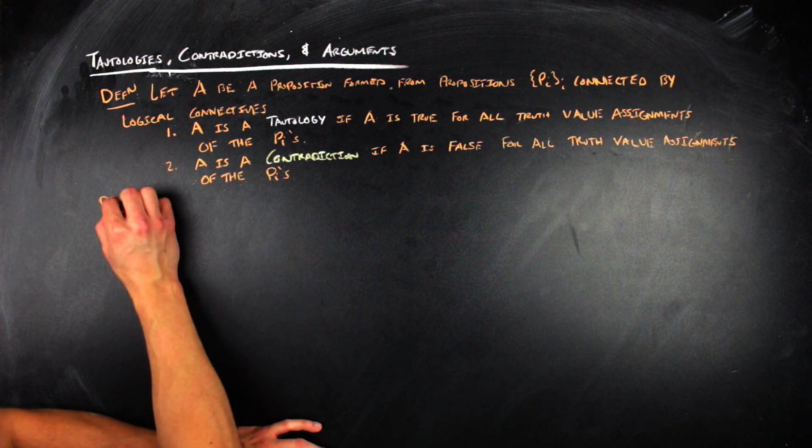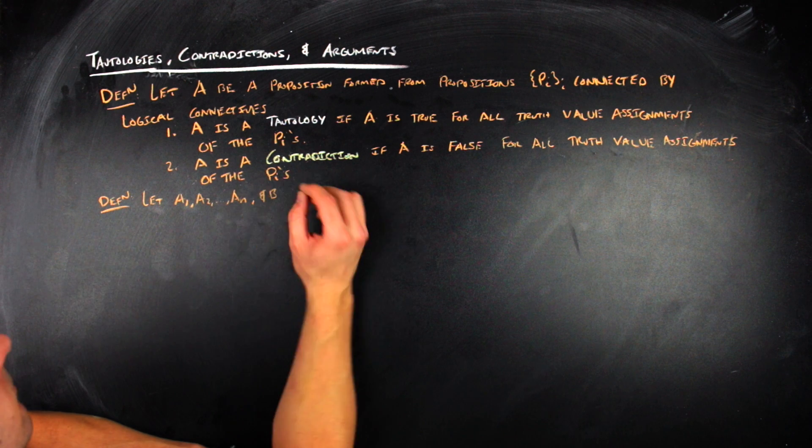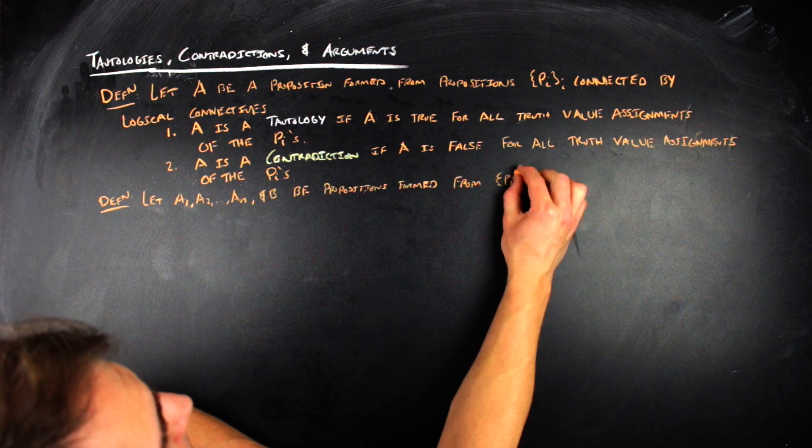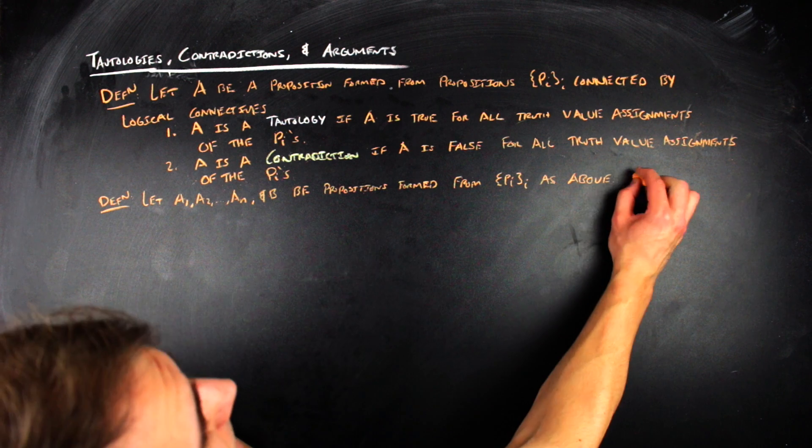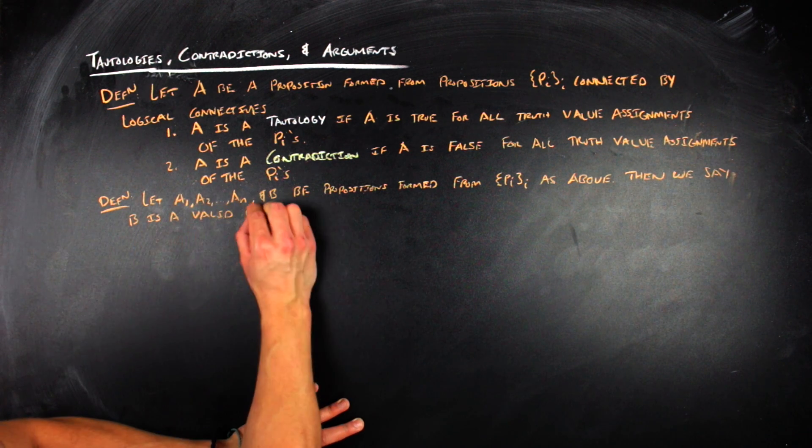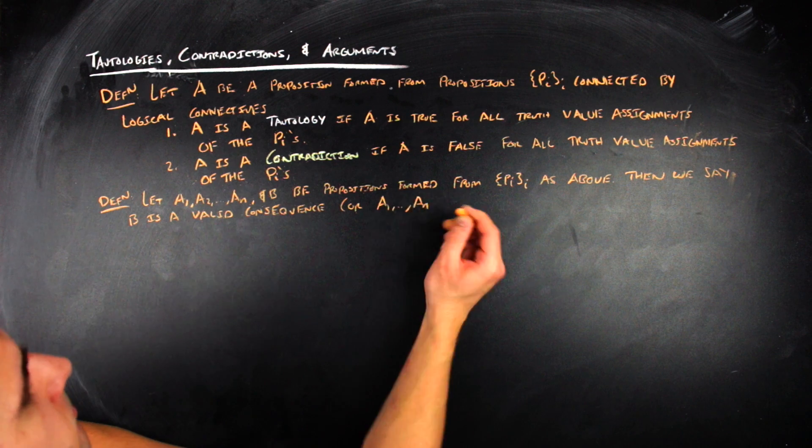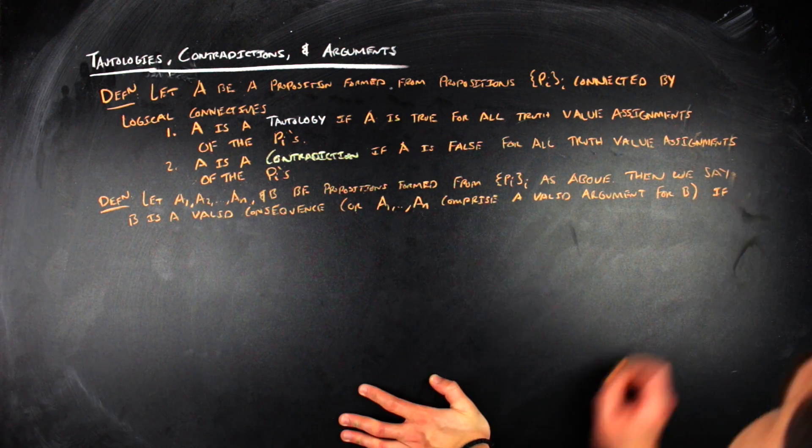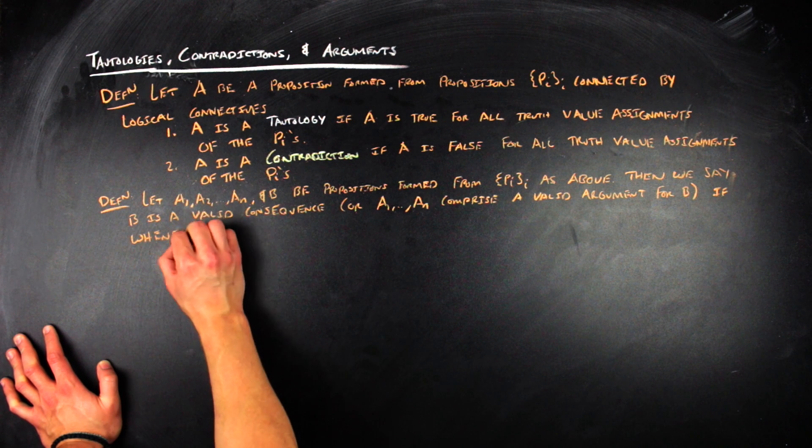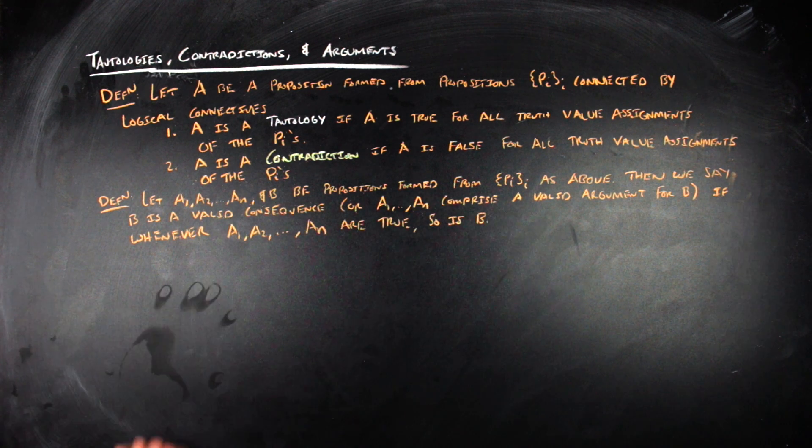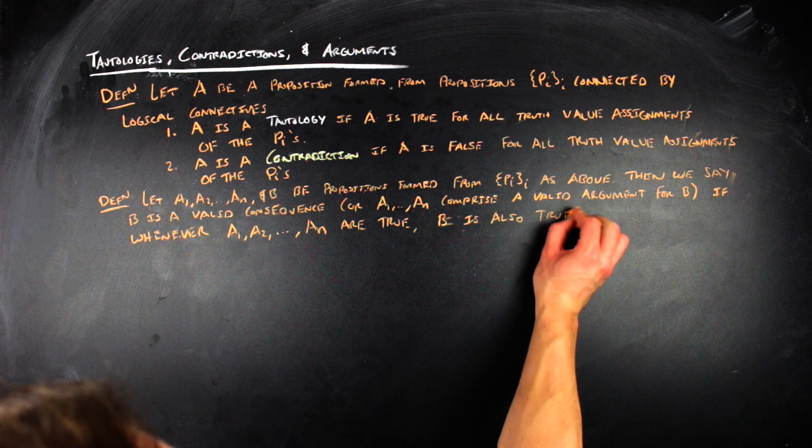The reason that you define these things is because you want to talk about valid arguments. So by definition, if we let A_1 through A_N be propositions formed from propositions P_i indexed by i, connected by logical connectives, then we say that B is a valid consequence of A_1 through A_N, or that A_1 through A_N form a valid argument for B, if for every assignment of truth values that make A_1 through A_N true, B is then also true.